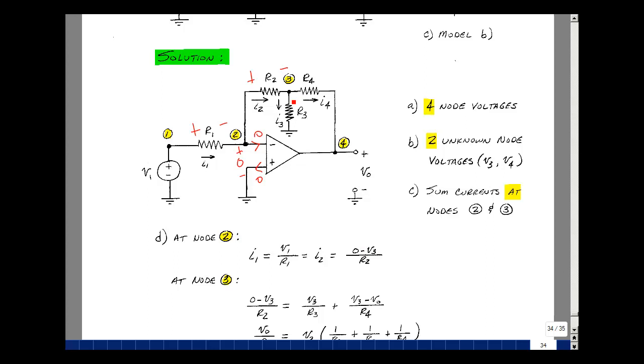Let's sum the currents here. The current that enters is zero minus V3 over R2. The current that leaves is V3 over R3, and then the current leaving in this direction is V3 minus V4, which is Vout, divided by R4. And that's this expression right over here.